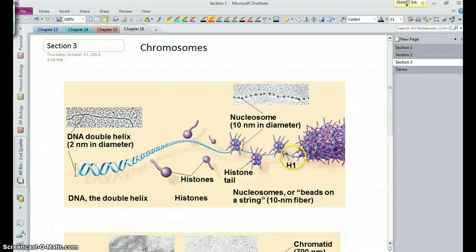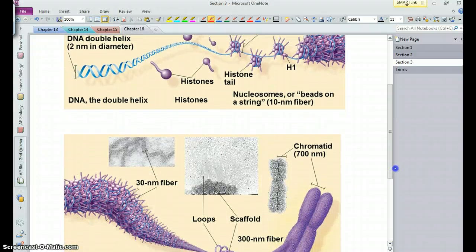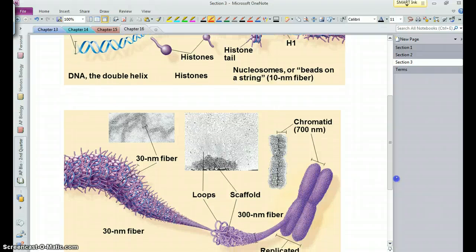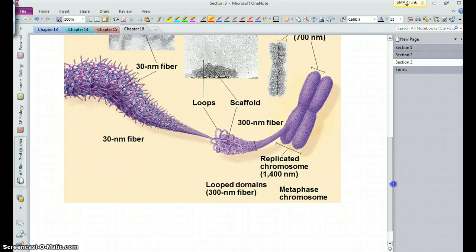What happens is then the nucleosomes will bunch together so that a piece of DNA that was, you know, this long is now only this long. It has become shortened, if you will, by wrapping around these histones and these nucleosomes and bunching together. So that makes what's known as this 30-nanometer fiber, which is again the DNA wrapped around the histones which have formed these structures called nucleosomes.